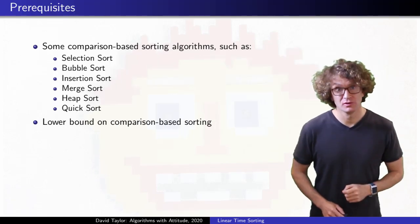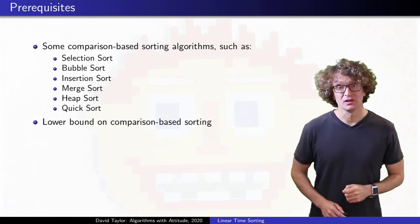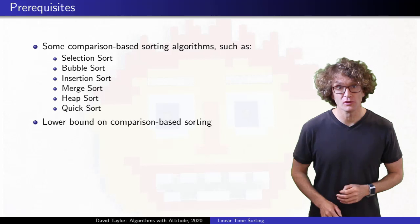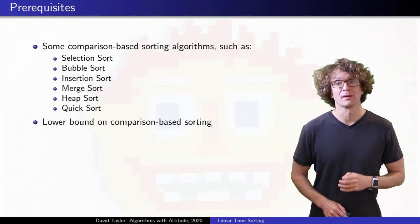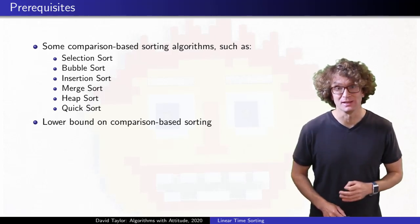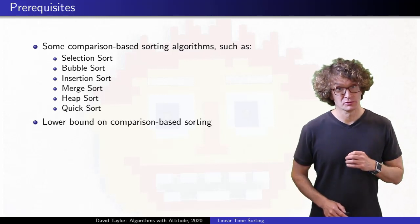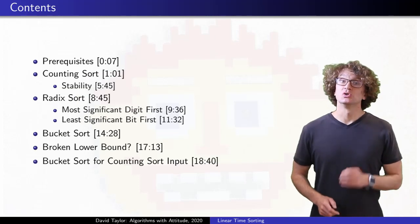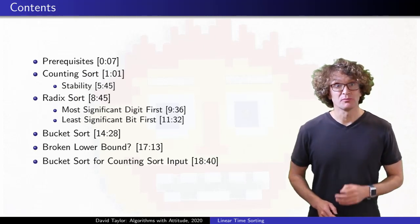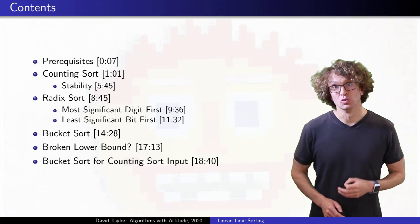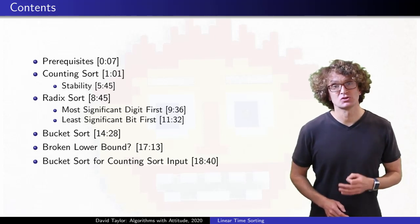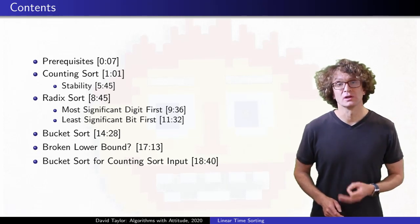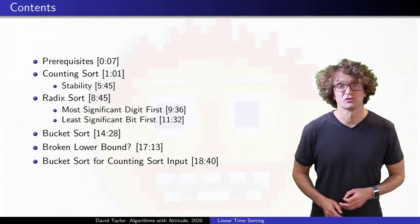By the time you get to this video, you should have already seen a few general purpose n log n time sorting algorithms, and hopefully you've also seen an argument for why comparison based sorting algorithms cannot beat that. The three algorithms covered here run faster, but they aren't comparison based. To use them, you need to know something more about the keys you will be sorting. Exploiting that extra knowledge lets us sort more quickly, but it doesn't work in all cases like a general comparison based sort.